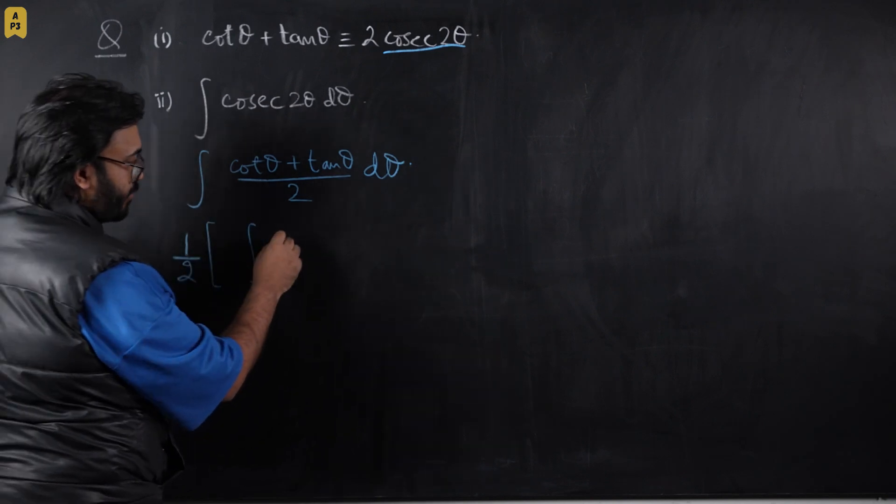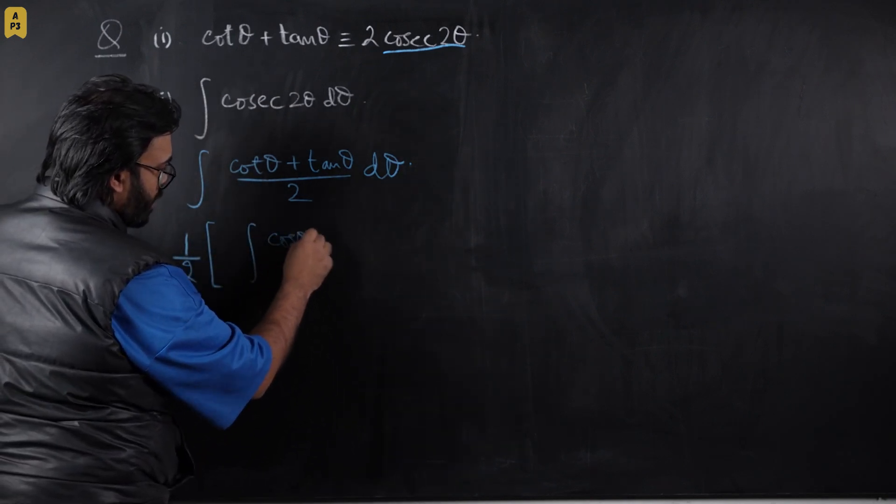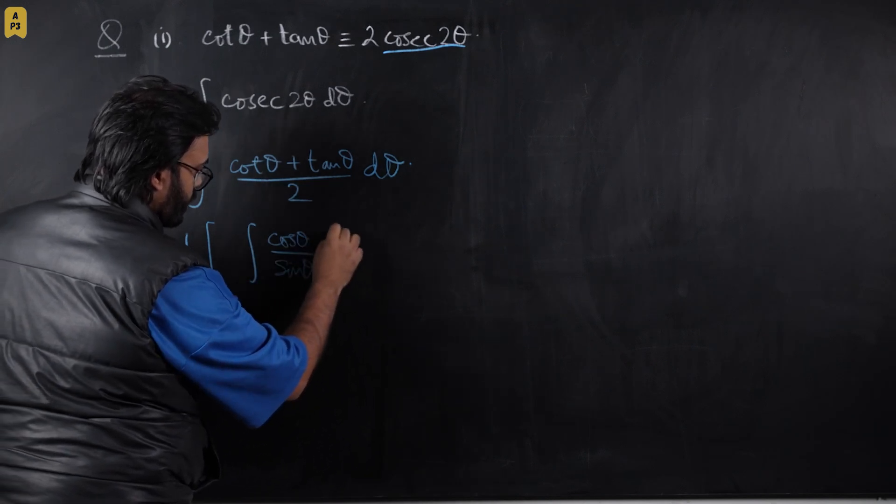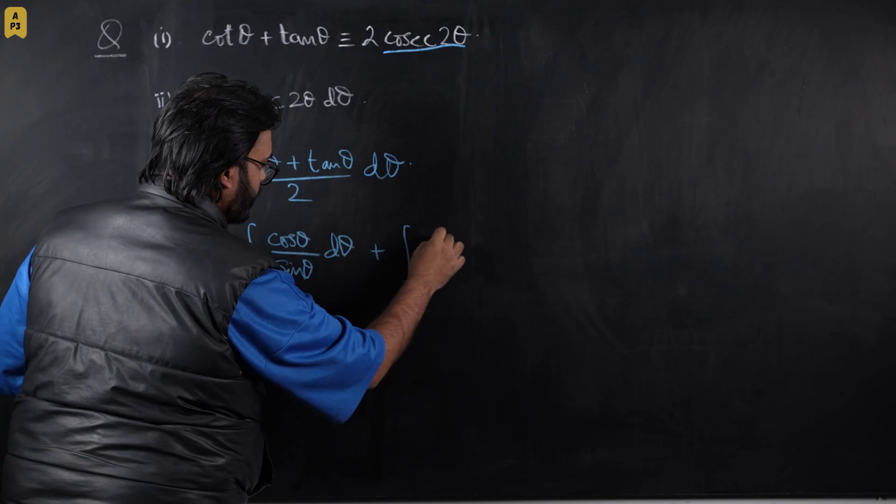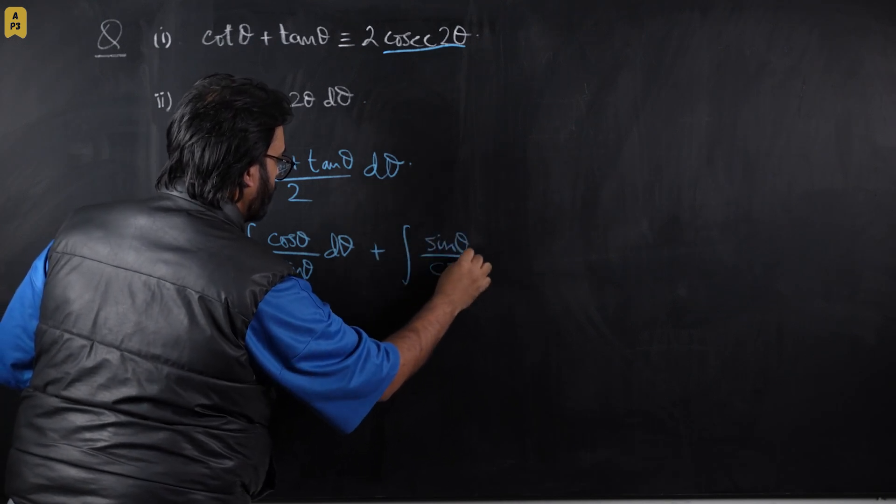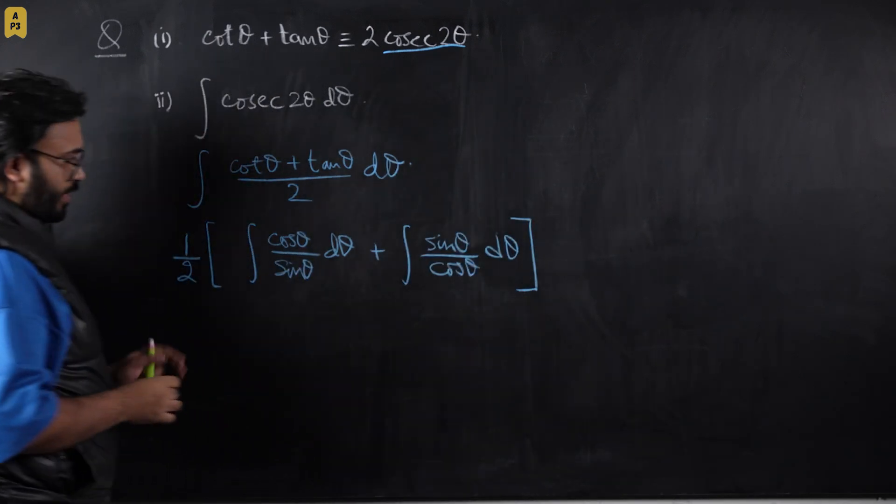So cot θ is cos θ / sin θ dθ, plus tan θ is sin θ / cos θ dθ. Now we are really close to the solution.